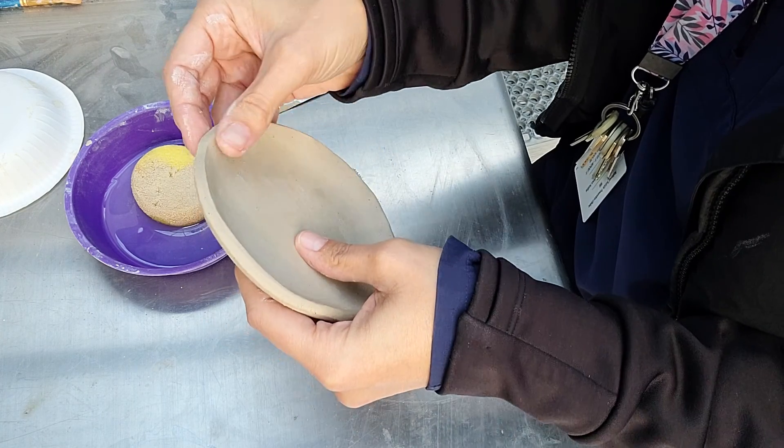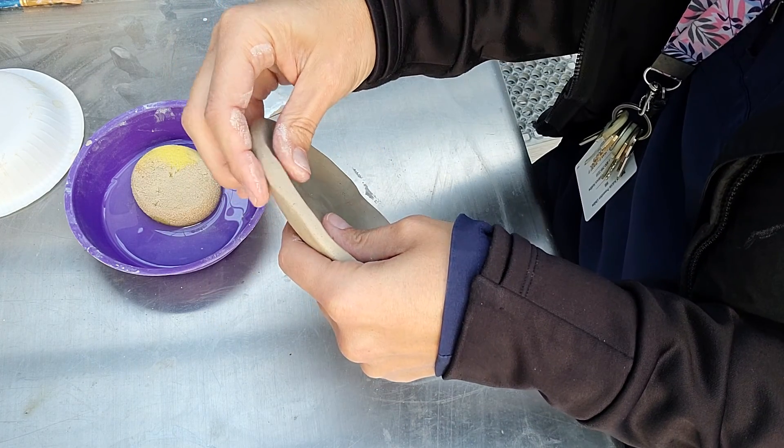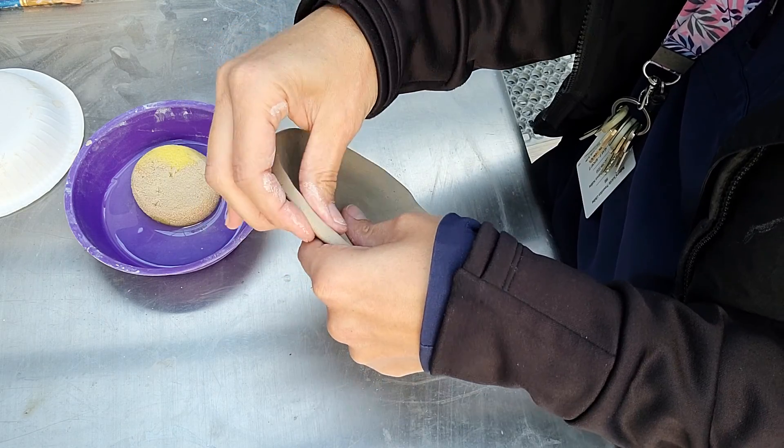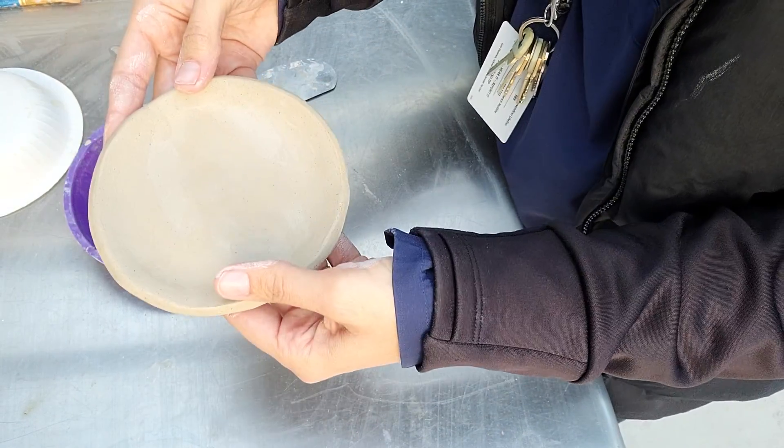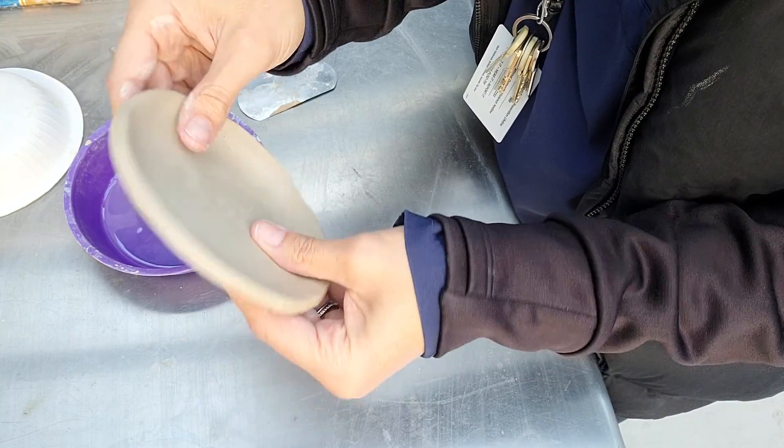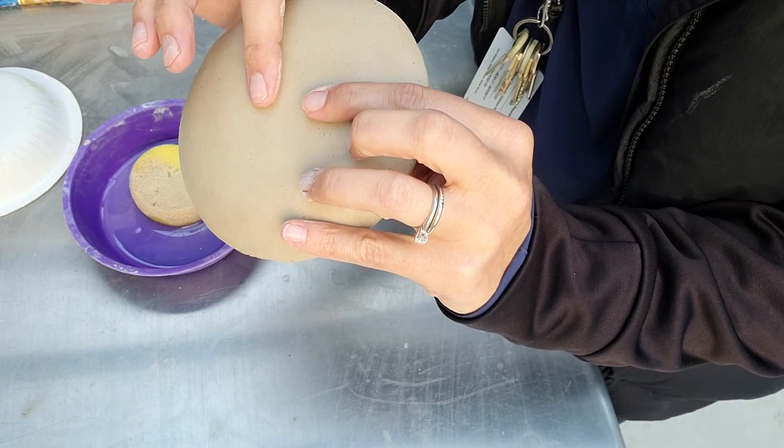But today's goal is to make sure our hump or slump molded project has formed and we've cleaned it all up, gotten it ready. You might even decide to put your name on it while the clay is really soft.